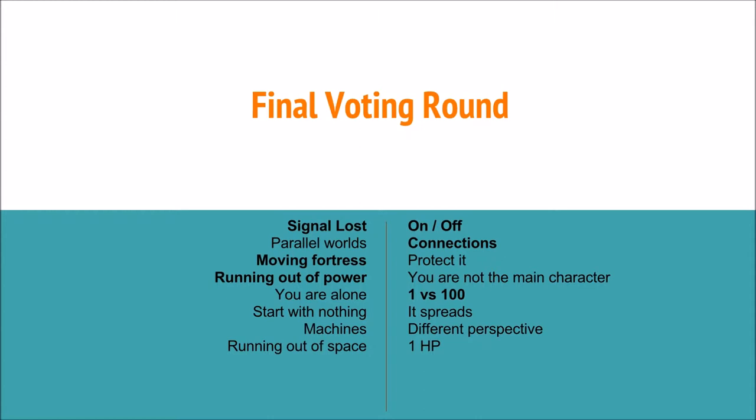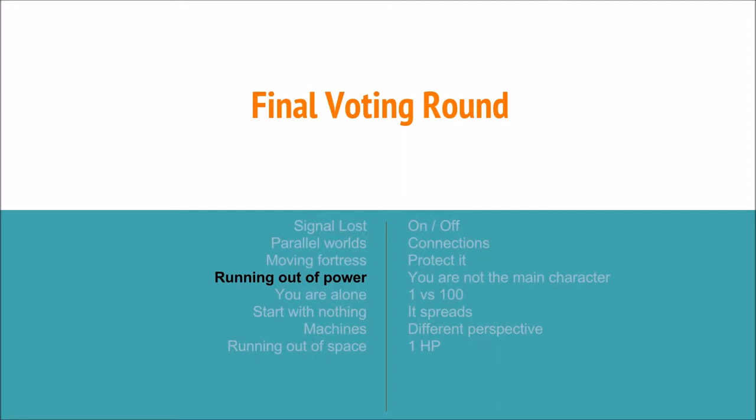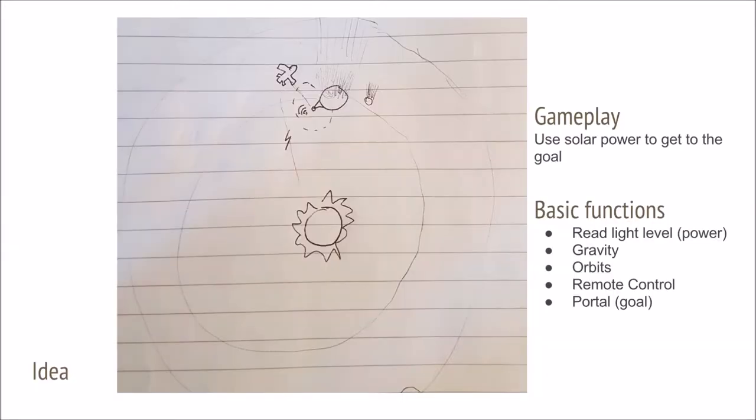In the end, the theme running out of power won, so the probe idea would have to be what I did. The idea is that we would have a probe driven by solar power with connections to some kind of satellite or radio tower. Basic functions were read the light level on the probe to get information about how much power we're getting, gravity functions to orbit around other bodies, detect remote control, and some kind of goal which ended up being a portal.